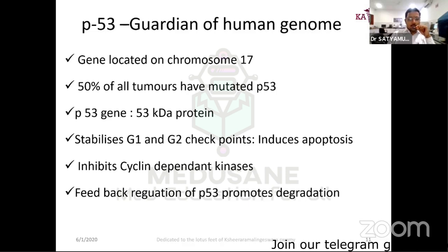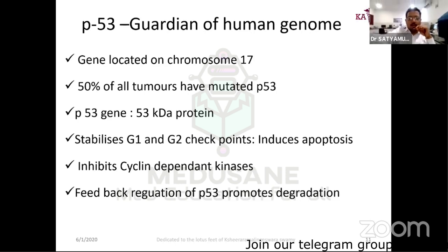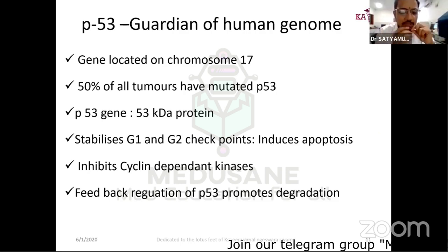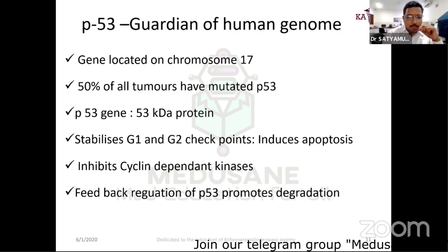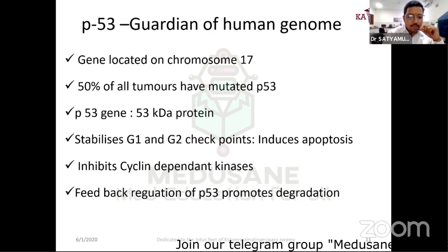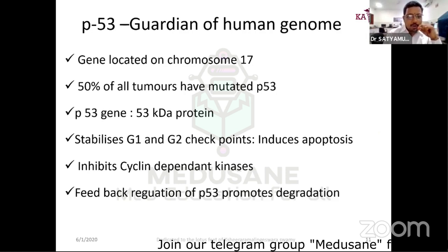Key points to remember about p53: the gene is located on chromosome 17; 50% of all tumors have a mutated p53; it is named p53 because its protein product has an approximate molecular weight of 53 kilodaltons. It stabilizes G1 and G2 checkpoints, induces apoptosis when the cell is abnormal, and acts through cyclin-dependent kinases. Dysregulation of p53 promotes degradation of cell cycle control.